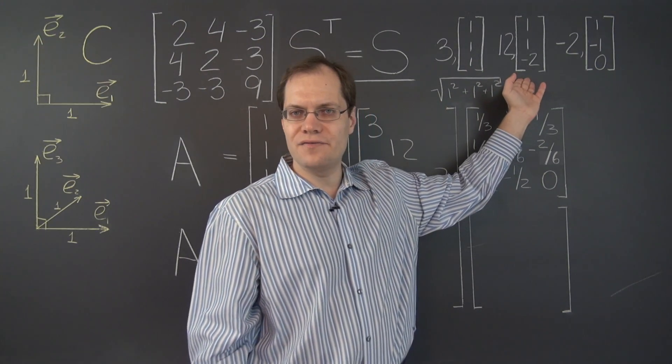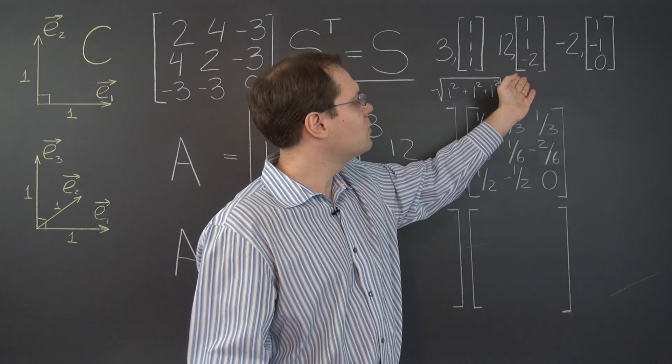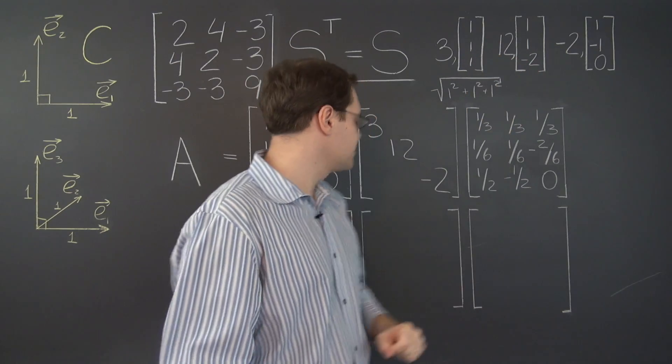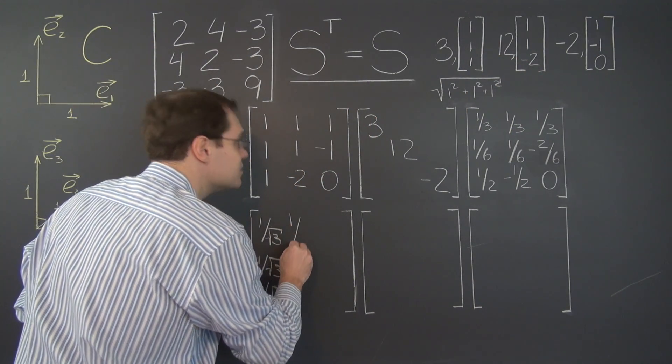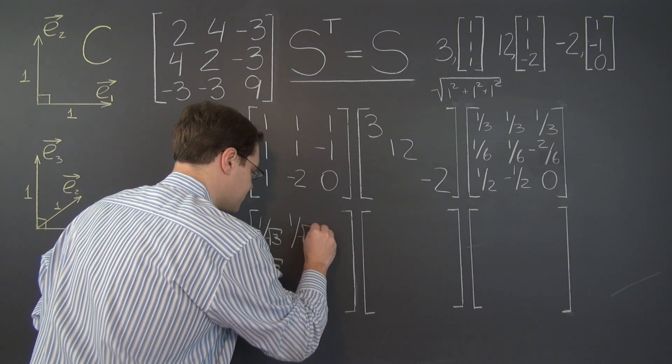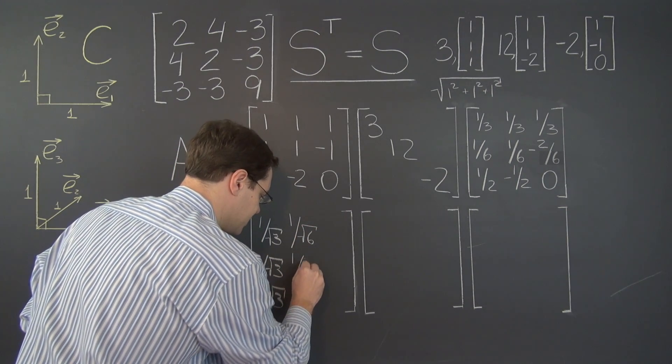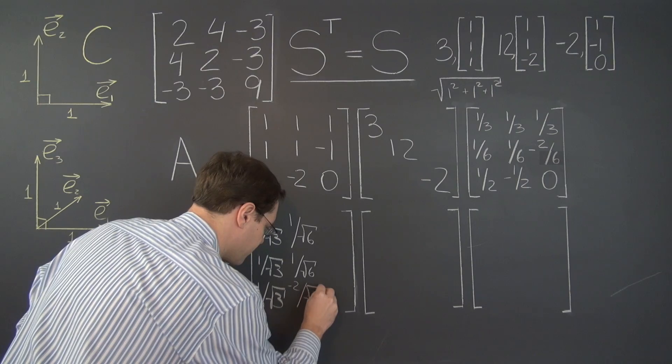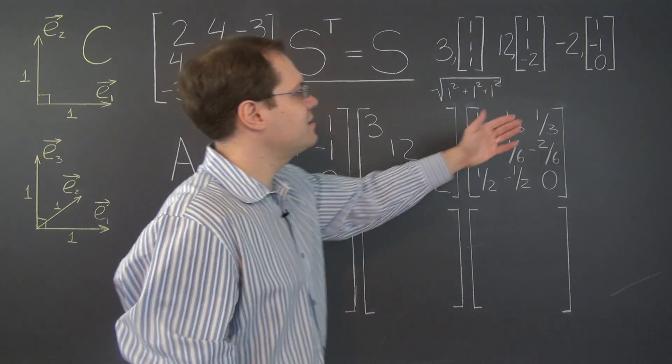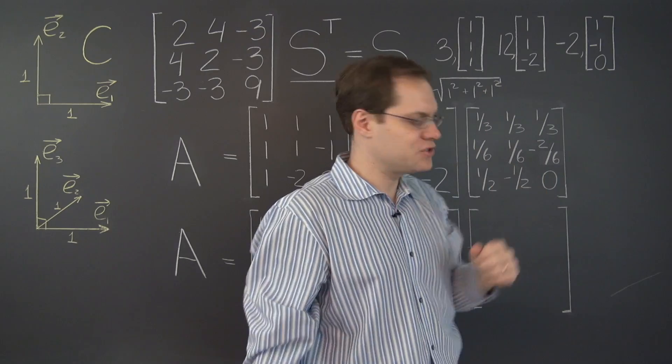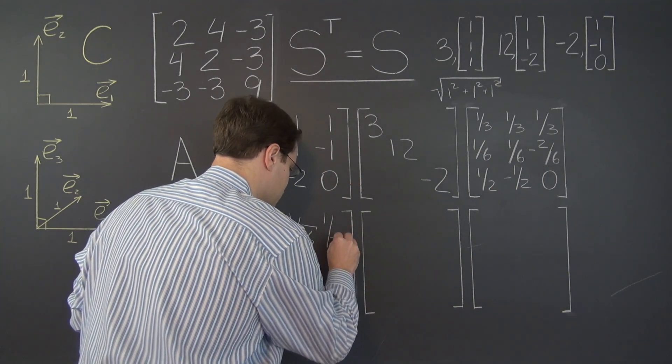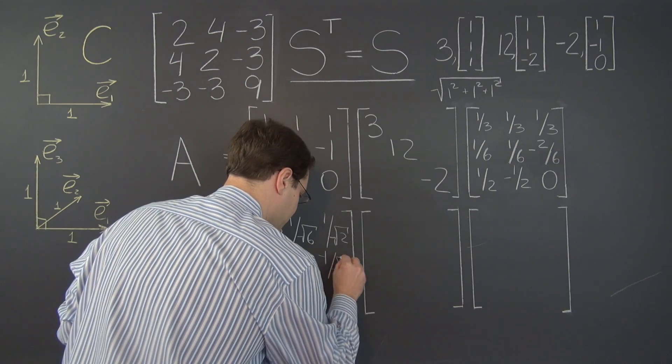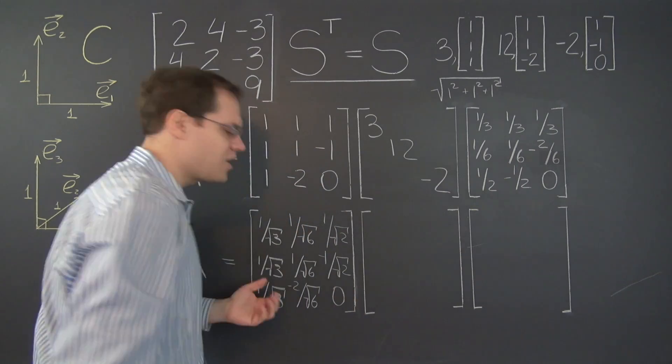What's the length of this vector in the same sense? It's square root of 6. 1 plus 1 plus 4, square root of 6. So what we have now is 1 over square root of 6, 1 over square root of 6, and minus 2 over square root of 6. And finally, what's the length of this vector? Square root of 2. So we have 1 over square root of 2, negative 1 over square root of 2, and 0. Is all of this worth it? Yes, it is.